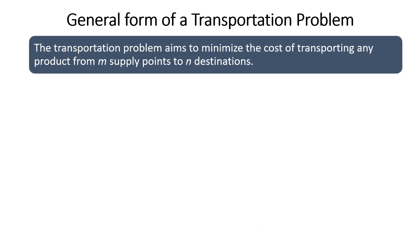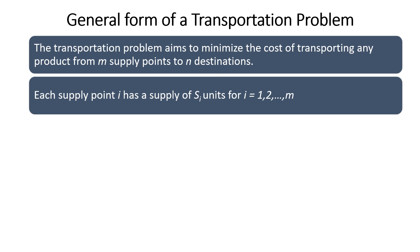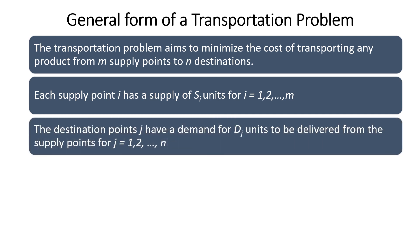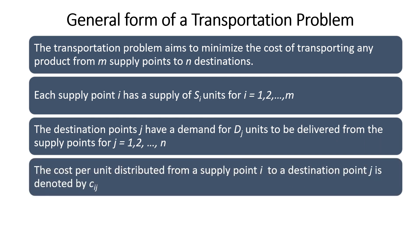Finally, we look at the general form. To derive the general form, we generalize the number of supply points and destination points. Consider the case where you have m supply points and n destinations. We use Si to denote the supply capacities for all m supply points, so S1, S2, up to Sm. Similarly, we use Dj to denote the demand requirements at each demand center, so D1, D2, D3 up to Dn. Note that we use i for the supply source and j for the demand destination.